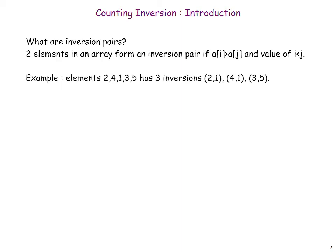For example, look at these elements 2, 4, 1, 3, 5 which are in an array. These elements have a total of 3 inversions which are (2,1), (4,1) and (4,3). Let us see how this works.